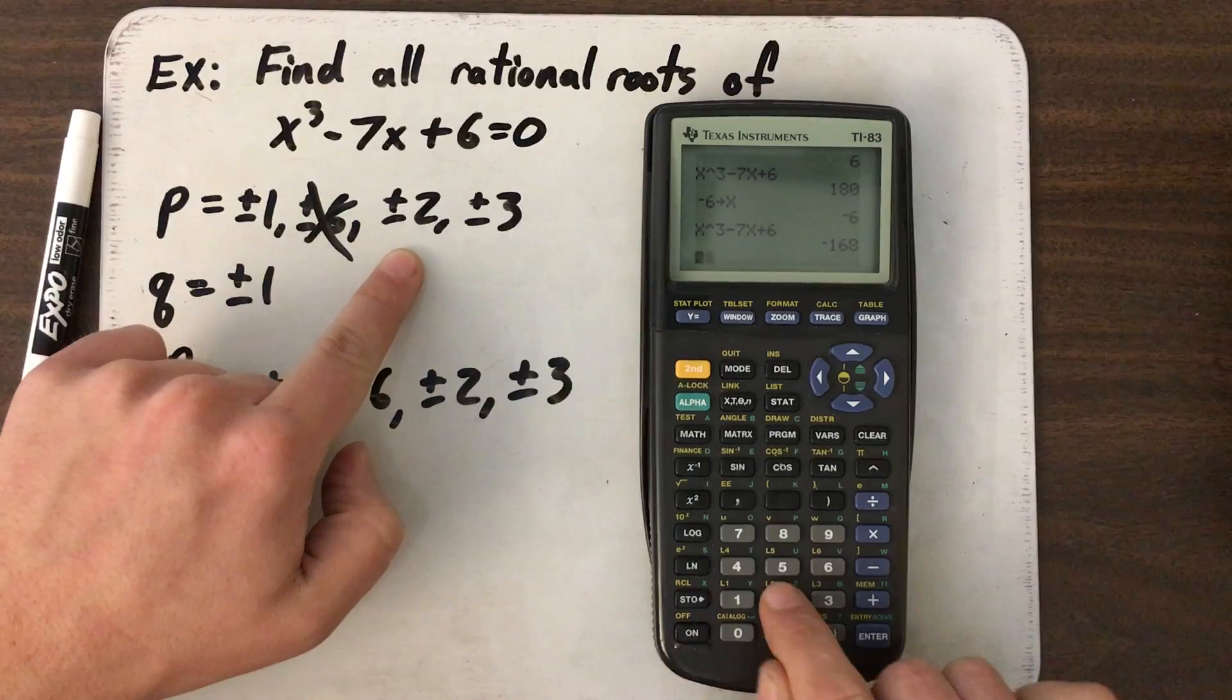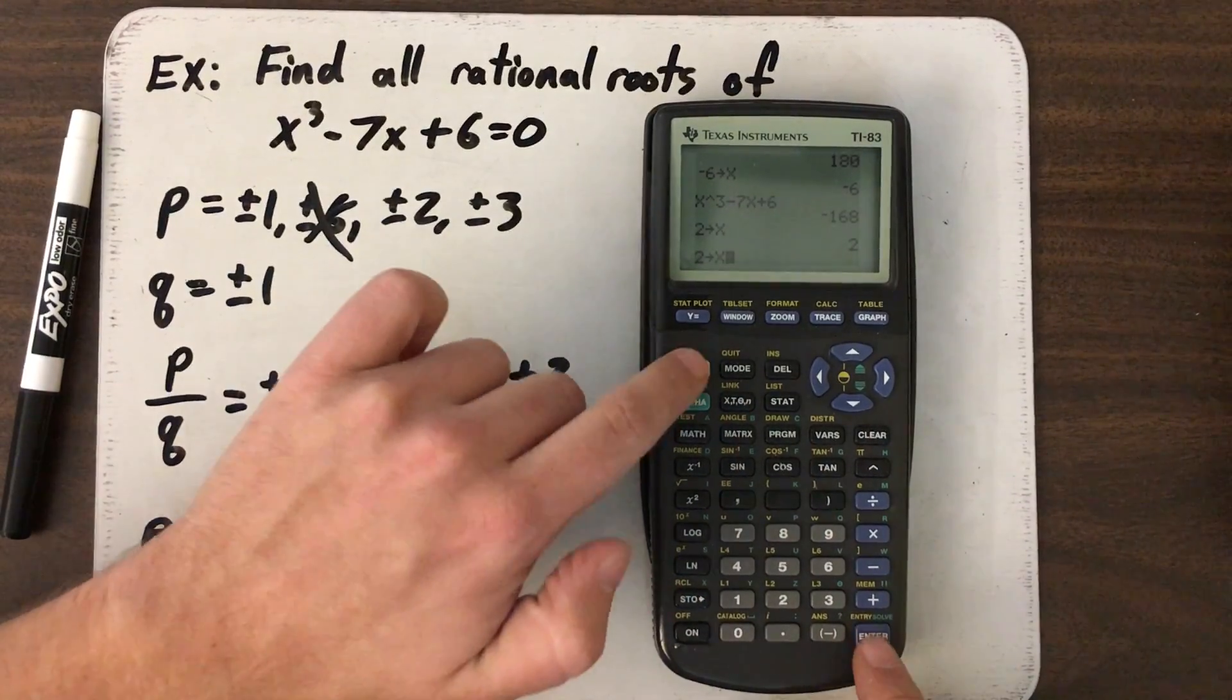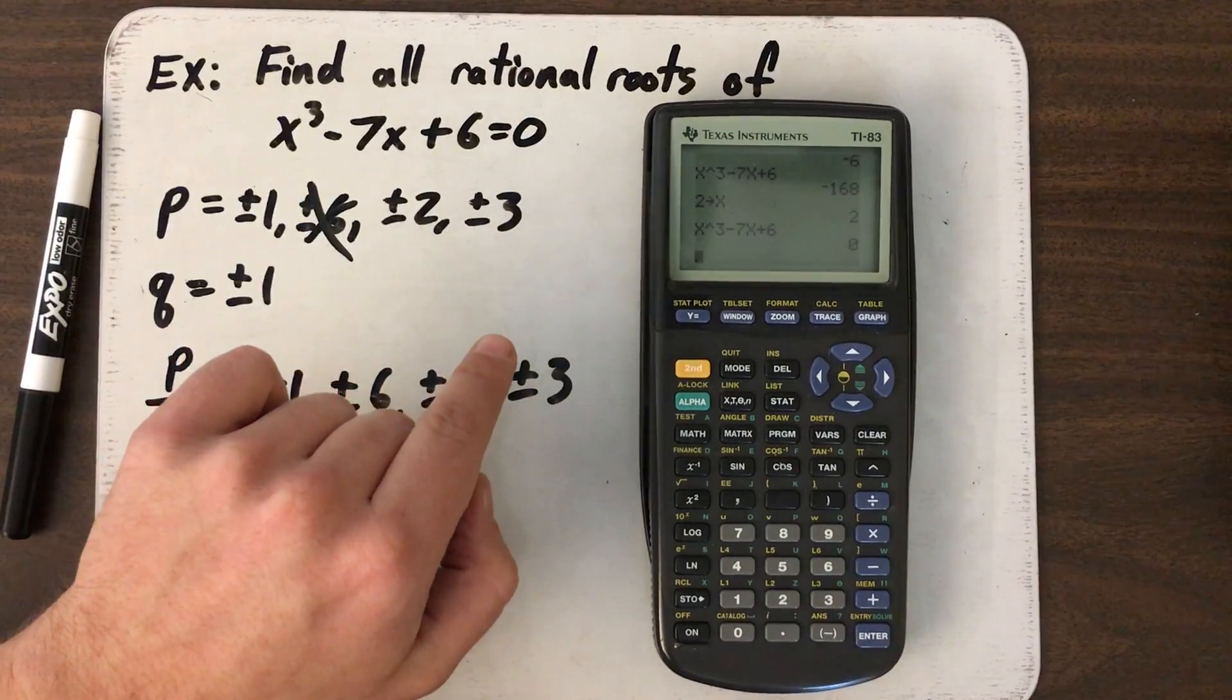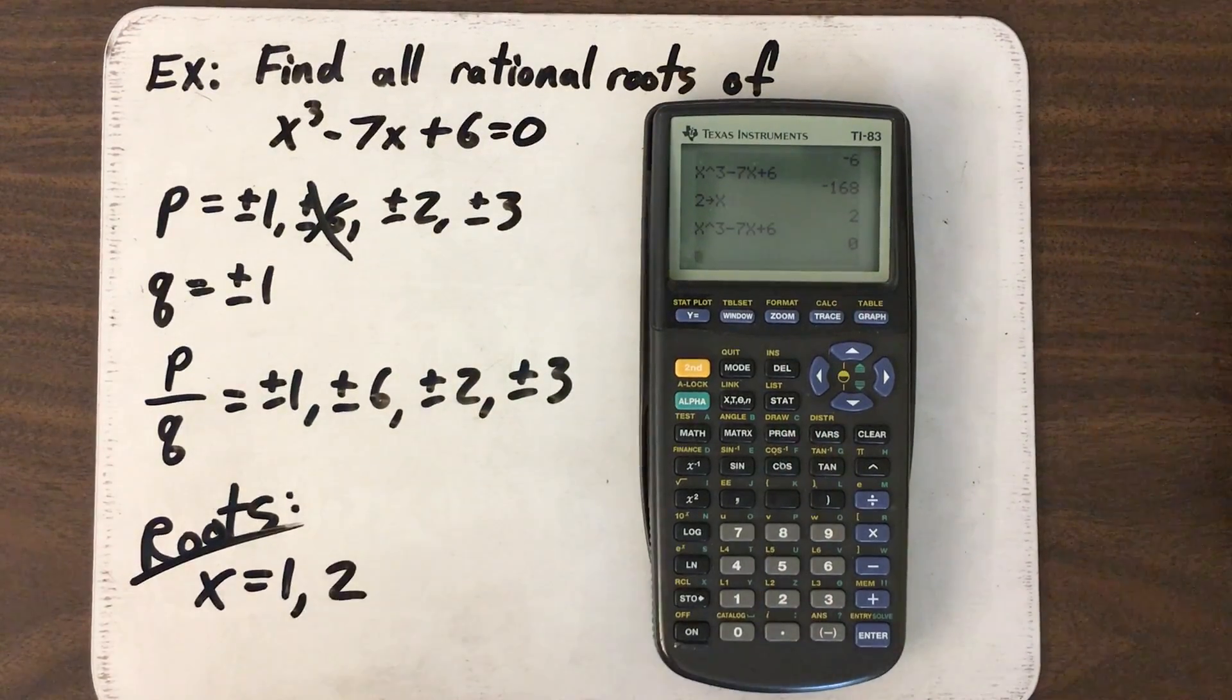Let's try 2. 2, store for X. Enter. Second, enter. Second, enter. Test it out. Hey, 2 is a possible root. Awesome. I'll write that down.